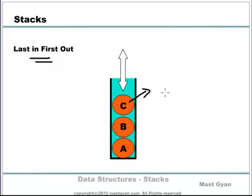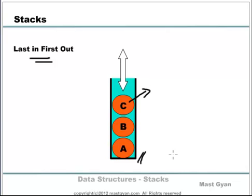C happens to be the most recently inserted object into this container. Hence, in this simple jar, only the most recently inserted object can be removed at a time. Isn't that the rule for a stack? Yes, it is — last in, first out. Hence, this simple jar has all the properties of a stack. Using this jar, we will look at all the operations and the properties of a stack in the following slides.